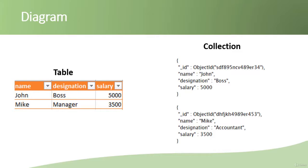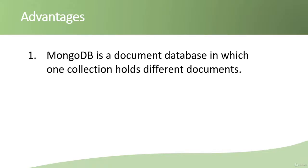A table and a collection are equivalent. One record in a table is known as a row, and one record in a collection is known as a document. Now let's discuss some advantages of using MongoDB. First, MongoDB is a document database in which one collection holds different documents, each with a different schema — this is the biggest advantage.